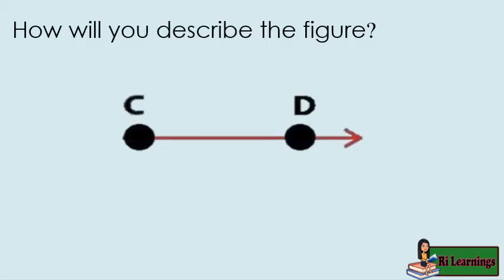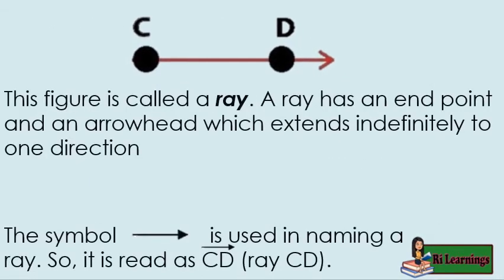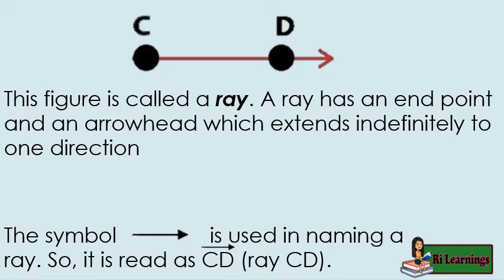How will you describe the figure? This figure has an endpoint on one end and an arrowhead on the opposite direction. This figure is called a ray. A ray has an endpoint and an arrowhead which extends indefinitely to one direction. This symbol is used in naming a ray. So it is read as ray CD with a ray symbol on top, or ray CD.